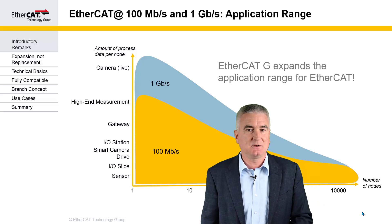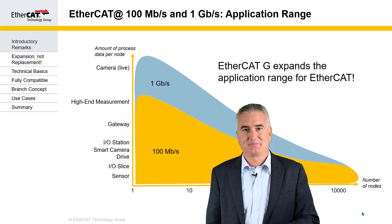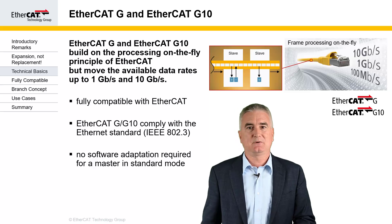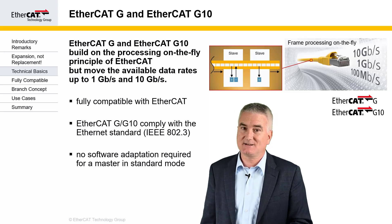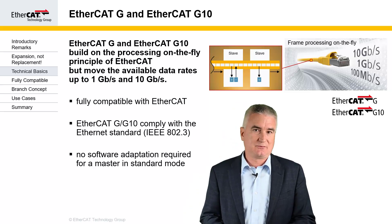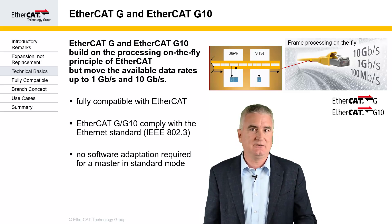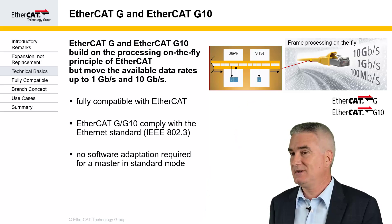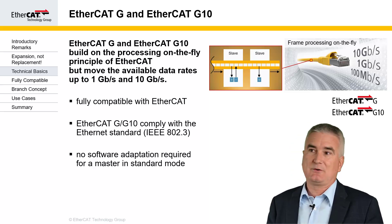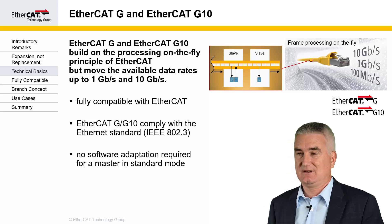At gigabit speed, we have more bandwidth available and we can expand the application range for EtherCAT substantially. EtherCAT-G and G10 use the same functional principle of EtherCAT at 100 megabit per second, but at higher data rates. So it's fully compatible. And of course, we are also fully compatible to the IEEE 802.3 standards using standard Ethernet frames, not changing anything to the frame format. You don't even need to change your software in the EtherCAT master. If you have a gigabit port available, you can run EtherCAT-G in standard mode right away without changing anything in the software.